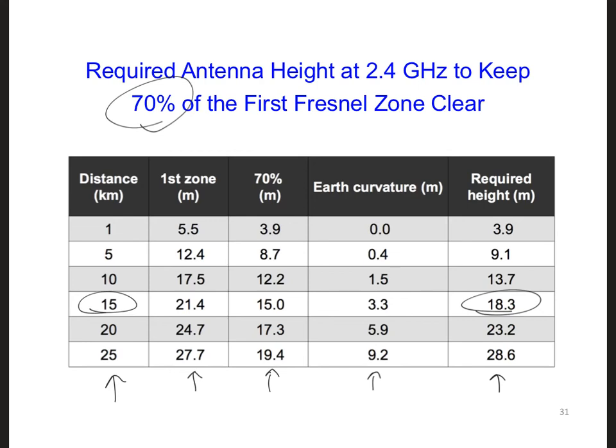The 70% of the first Fresnel zone is already quite clear. However, what this means is that as the length of the propagation path increases, the required height for the antennas is determined more and more by the Earth's curvature rather than the radius of the first Fresnel zone.